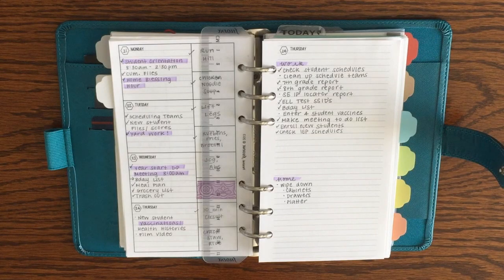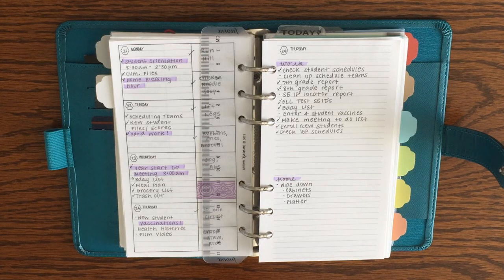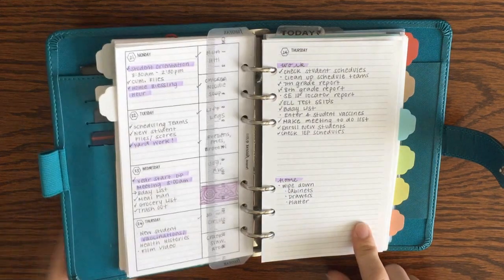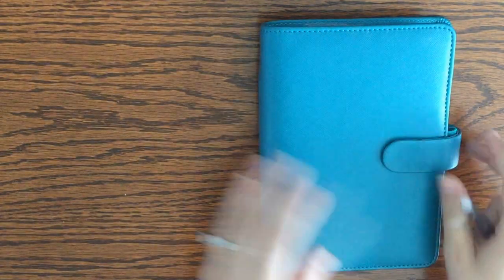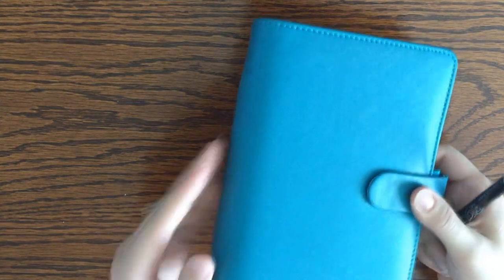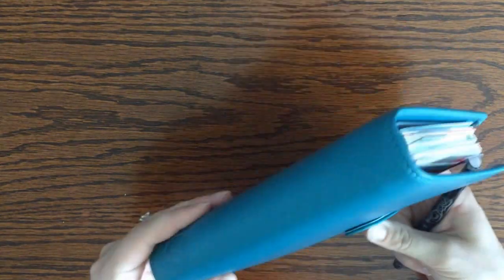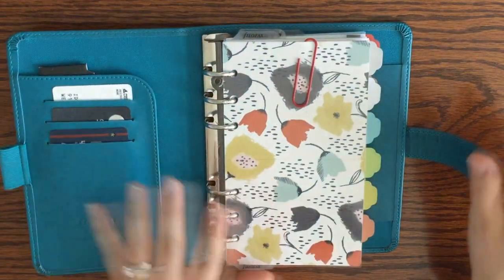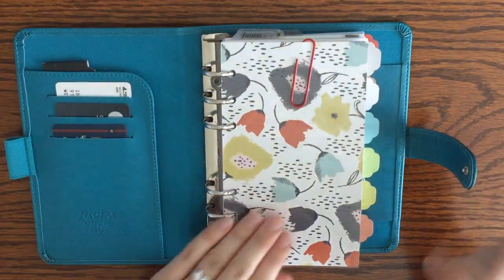I'm Amy and I'm Plans Meet Paper on Etsy, Instagram and YouTube, and today I'm here to show you how I plan my day. So this is my planner. It is a personal size Filofax in the Saffiano style in aquamarine, and I'm really liking it.